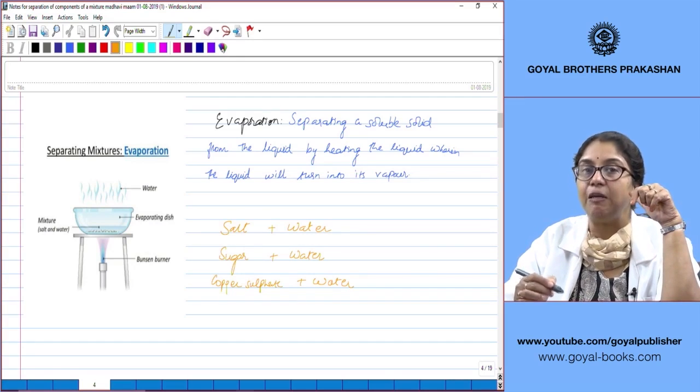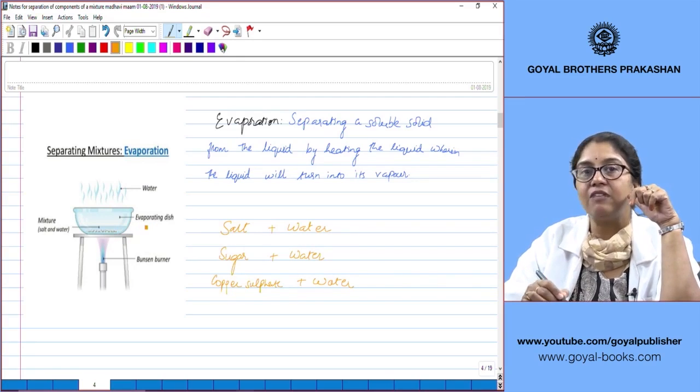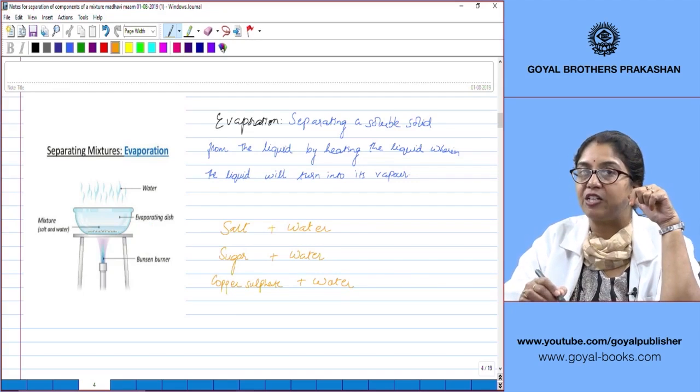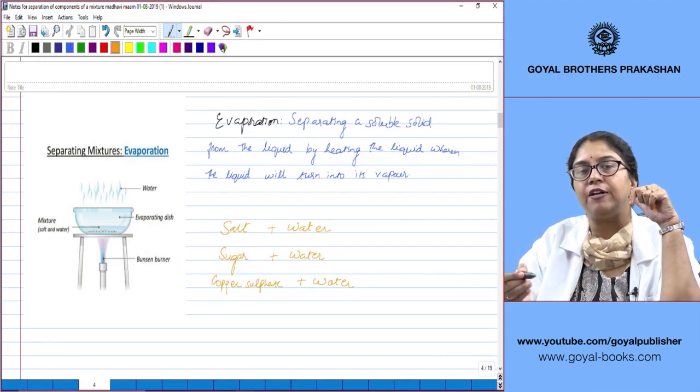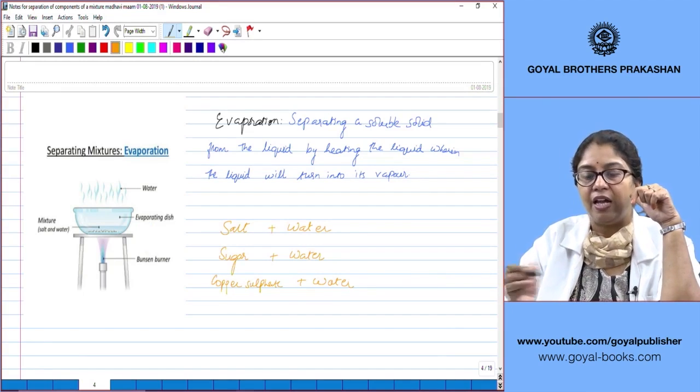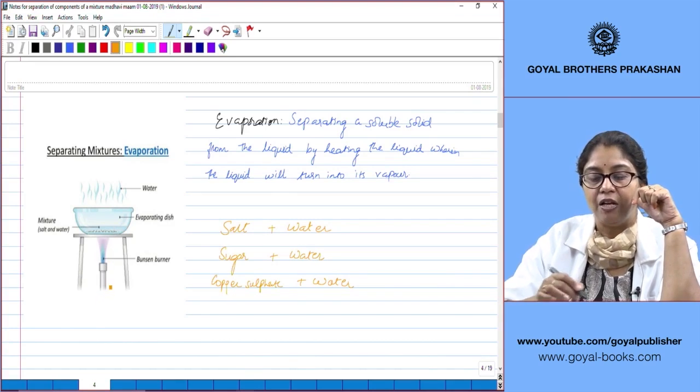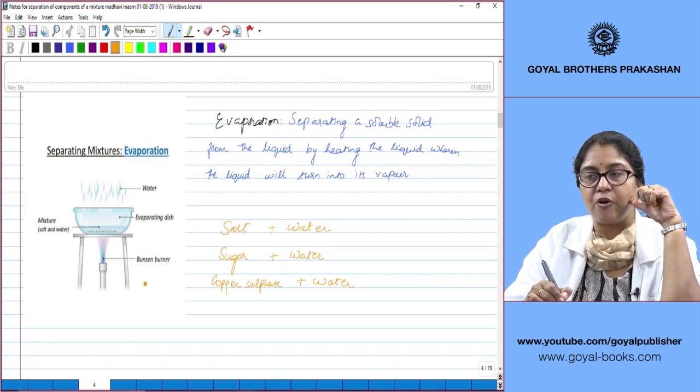We don't take deep vessels but we take shallow dishes like the evaporating dish, and this evaporating dish is made up of porcelain. We take this mixture of salt and water or any mixture of a soluble solid in a liquid in the evaporating dish, and we start heating it using the Bunsen burner. We place the evaporating dish containing the mixture on the tripod stand and start heating it.